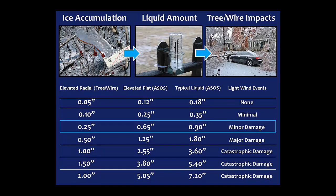Looking at past ice storms, an elevated radial ice accumulation of a quarter inch is generally when you start to get damage to trees and power lines. But if you call that an elevated flat ice accumulation, that's 0.65 inches of ice — a very different number. For a typical liquid amount, to get a quarter inch of radial ice on trees and power lines, you need about 0.90 inches of rain on average. These questions about what we're really measuring beg for further discussion, and we hope to move forward with those.